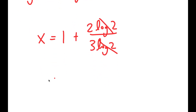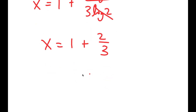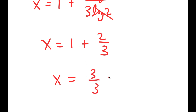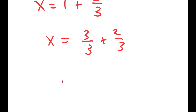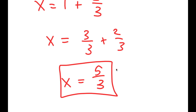The log 2 terms cancel out, and I get x is equal to 1 plus 2 over 3, which is equal to 3 over 3 plus 2 over 3, which is 5 over 3. So x is 5 over 3.